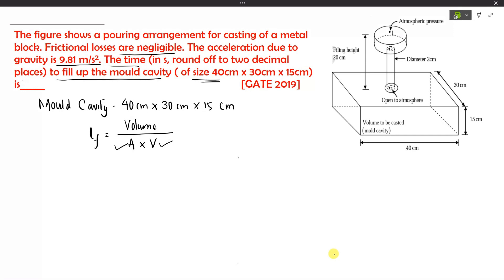The volume of the cavity is already given as 40 by 30 by 15. The area of cross section is also available from the diagram — the diameter is 2, so we can calculate the area. Now we need to find the velocity using the given data.